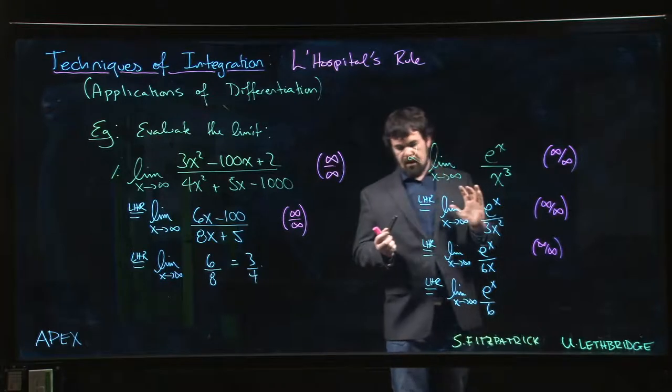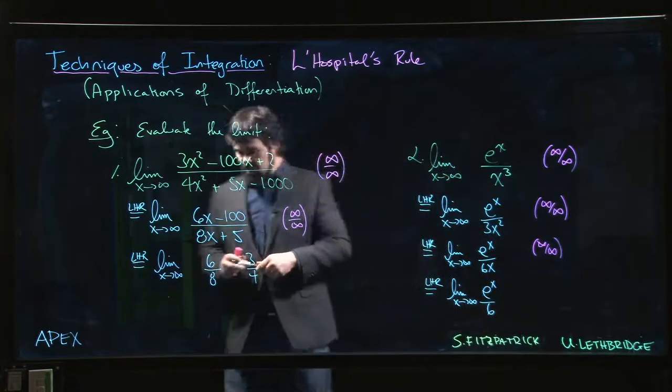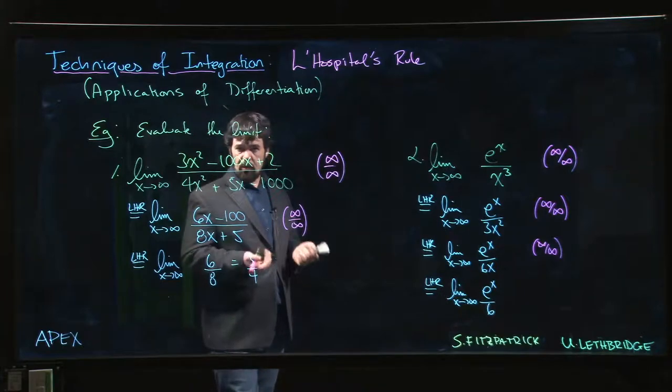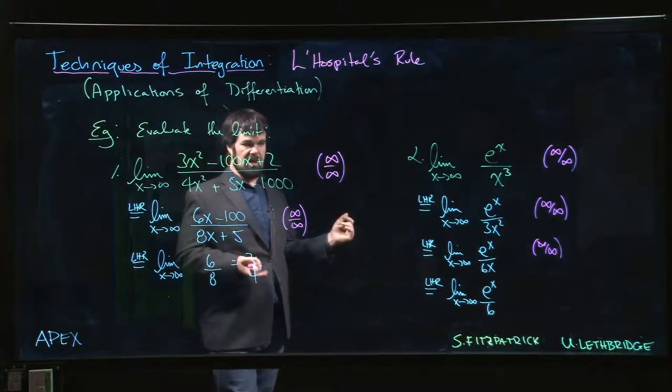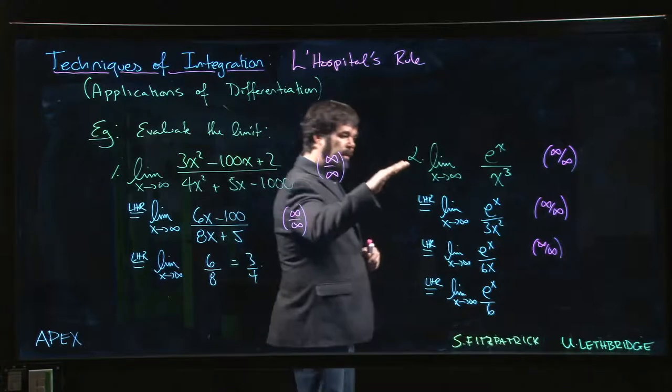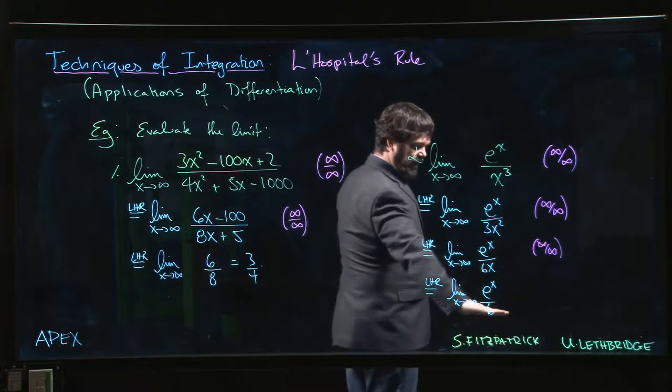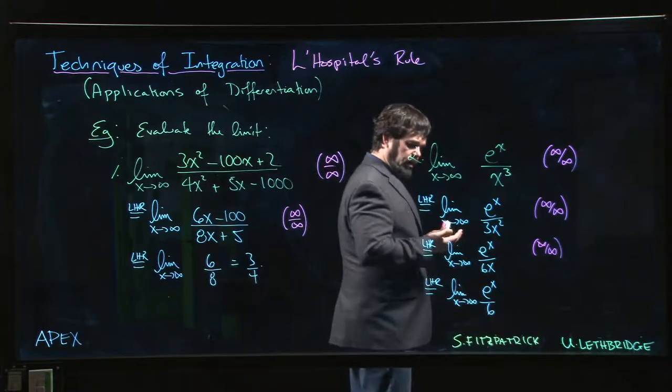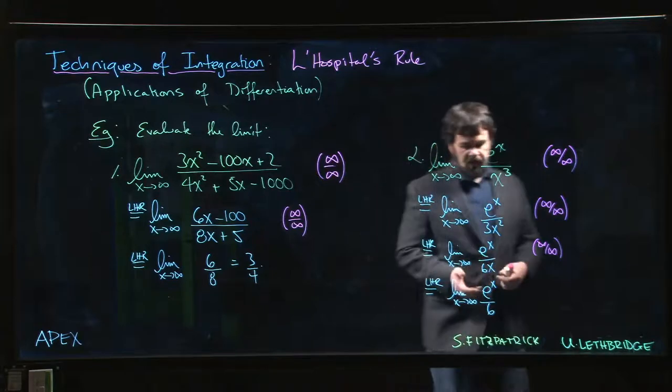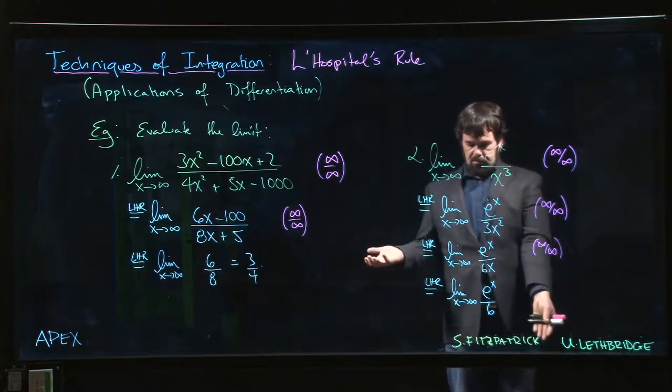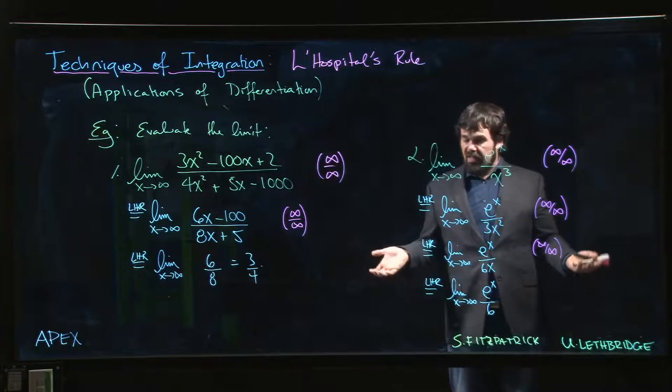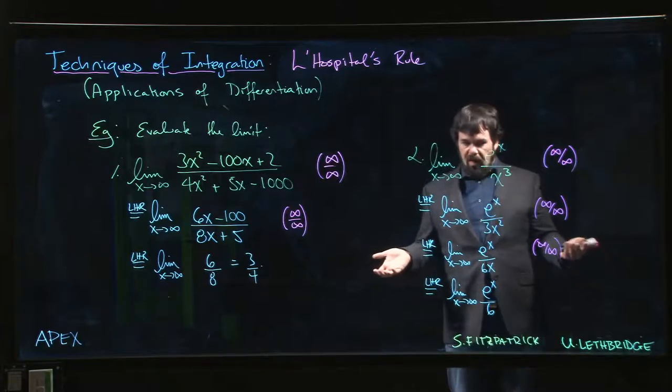Now you might be concerned that maybe this isn't a valid application of L'Hopital's rule, because we said at the outset that you can apply L'Hopital's rule any number of times, but the limit at the end has to actually exist. In this case, the limit is infinite, right? Because e to the x is still going to infinity, infinity divided by a constant is still infinity. Does that count? Is that a valid answer?